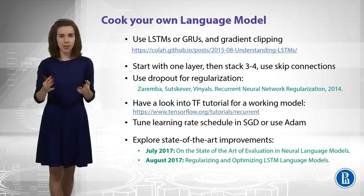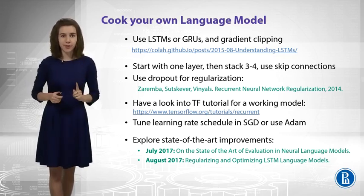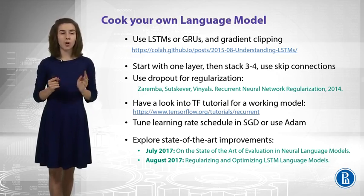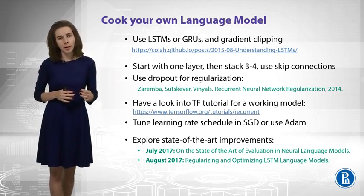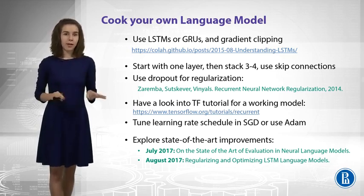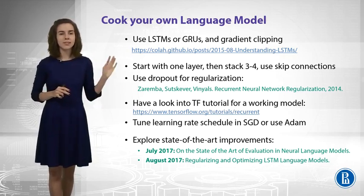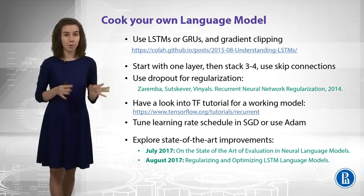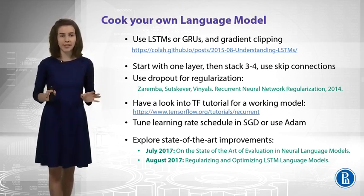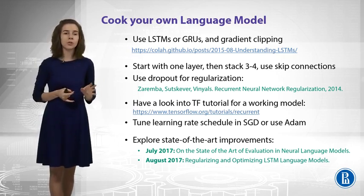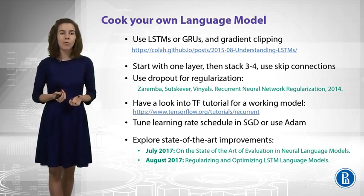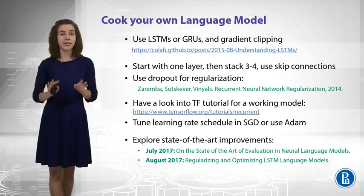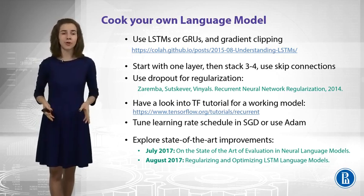Maybe you want to stack several layers, like three or four, and maybe you need some residual connections that allow you to skip layers. Another important thing to keep in mind is regularization — you could have heard about dropout. The paper provided here is about dropout applied to recurrent neural networks. If you don't want to think about it a lot, you can just check out the TensorFlow tutorial, which implements exactly this model and will give you something working straight away. The only thing you may want to do is tune the optimization procedure — you can use stochastic gradient descent, different learning rates, or other optimizers like Adam. Given this, you will have a really nice working language model, and most likely it will be enough for any application.